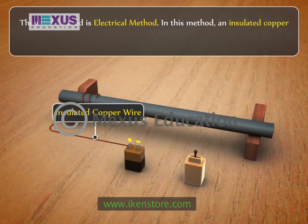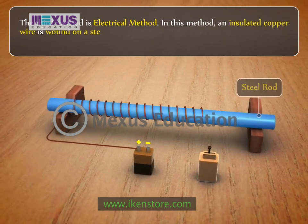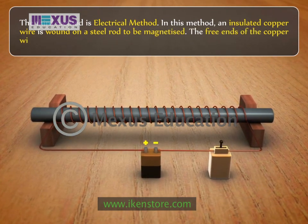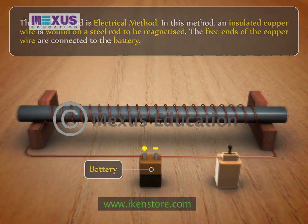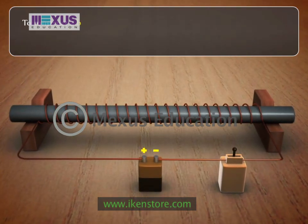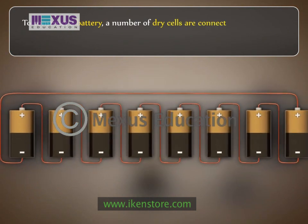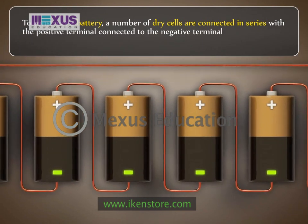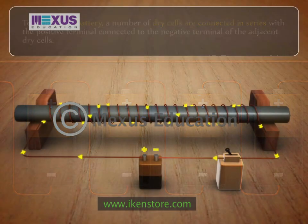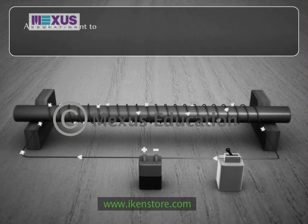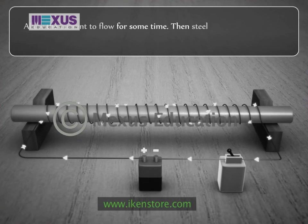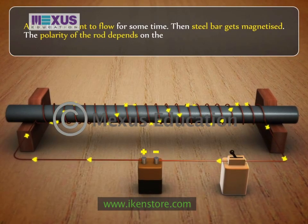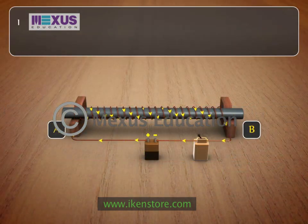In the electrical method, an insulated copper wire is wound on a steel rod to be magnetized. The free ends of the copper wire are connected to a battery. To construct the battery, a number of dry cells are connected in series, with the positive terminal connected to the negative terminal of the adjacent dry cell. Allow the current to flow for some time and the steel bar gets magnetized.